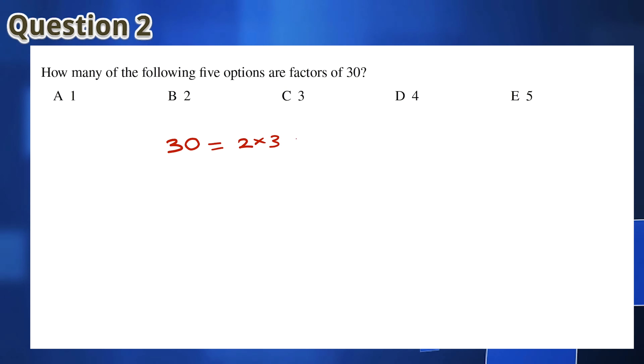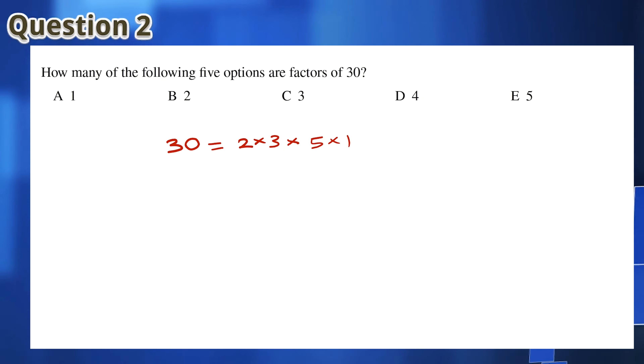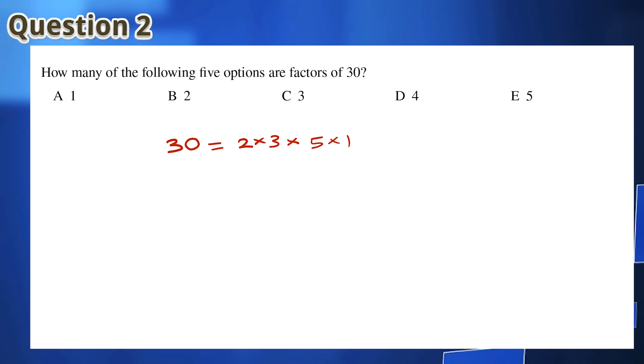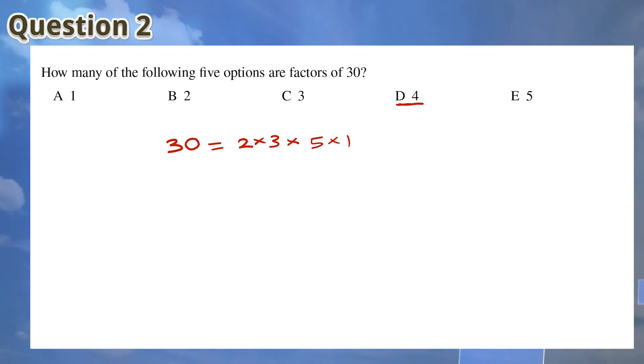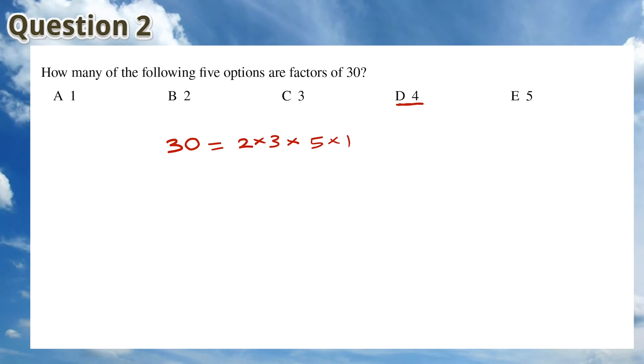For Question 2, of the options given, only 4 is not a factor of 30. This means that 4 of the options are factors of 30, so the answer is D.